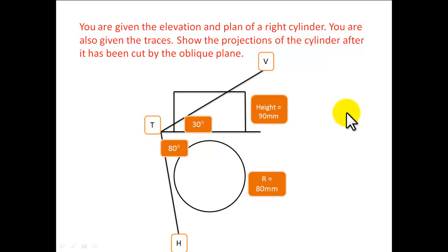The setup for this question is, Vt is at 20 degrees, Vt is at 80, the radius of the plan is 80 mm, the height of the elevation is 90 mm, and the xy line down to the centre of the plan is 100 mm.